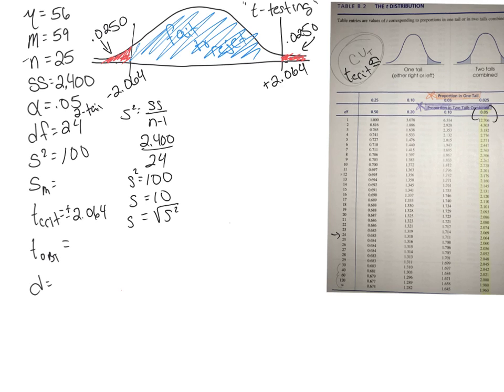Okay, now let's do standard error. So standard error is this S with an M at the bottom. And that equals the square root of variance divided by n. So we know that our variance is 100 divided by 25, or the square root of 4. So our standard error equals 2.